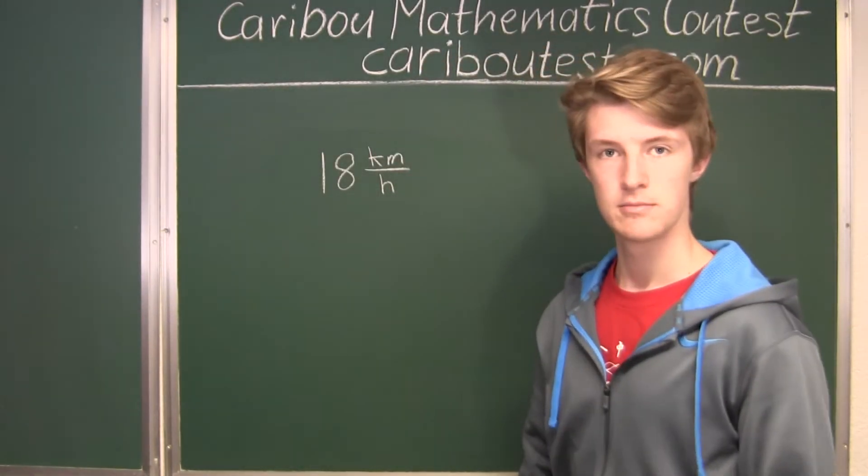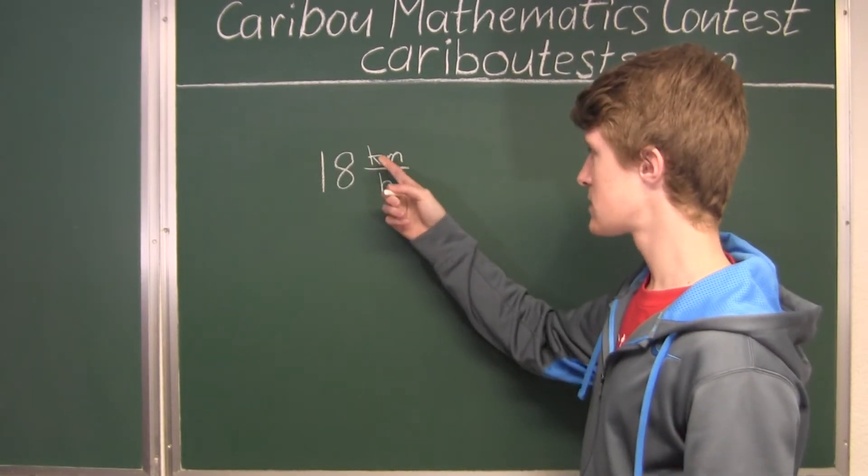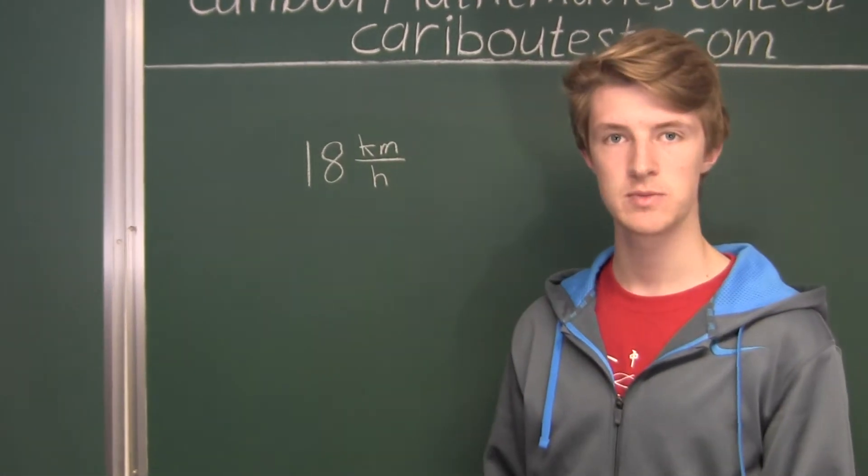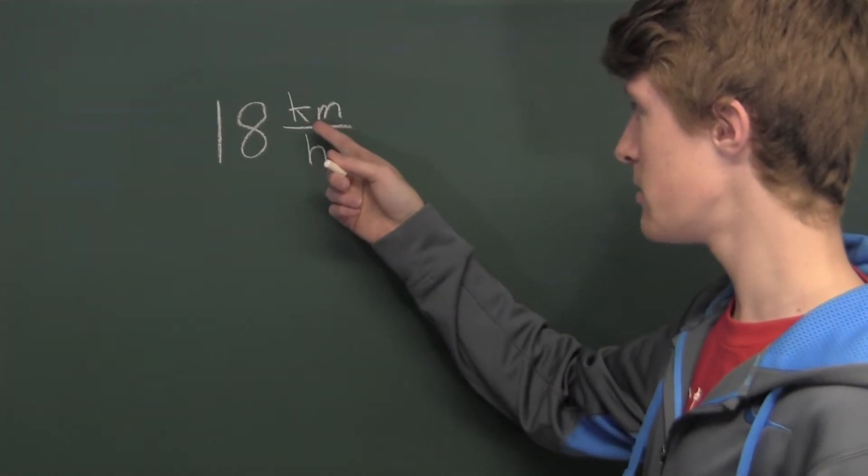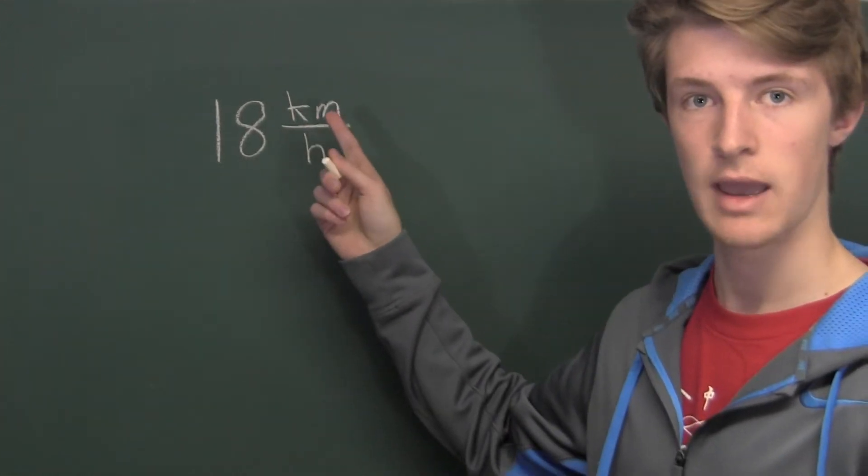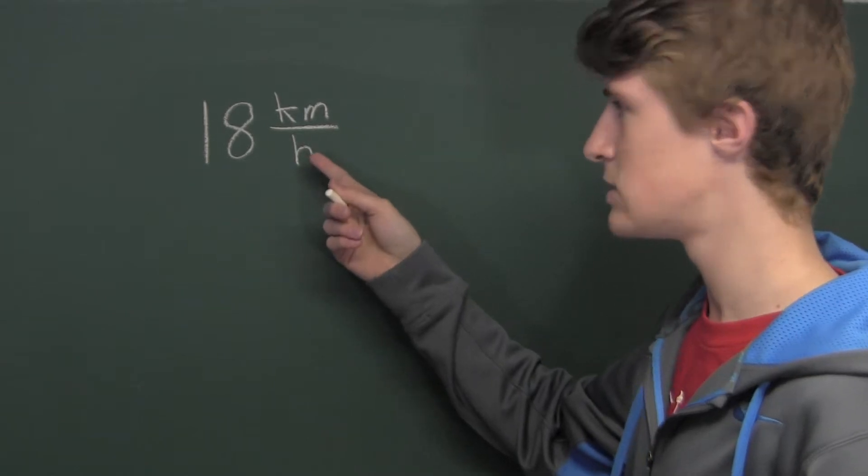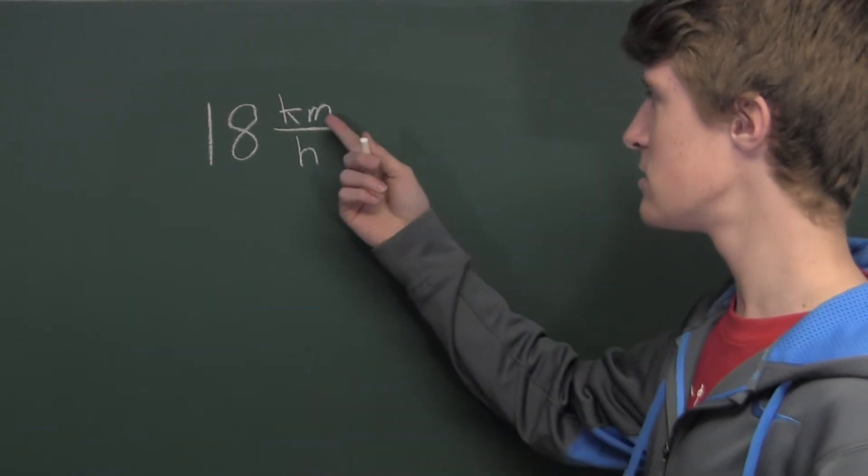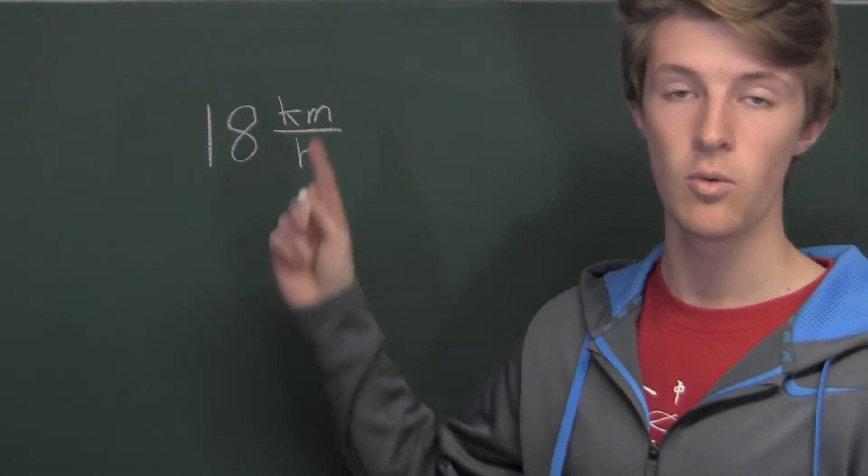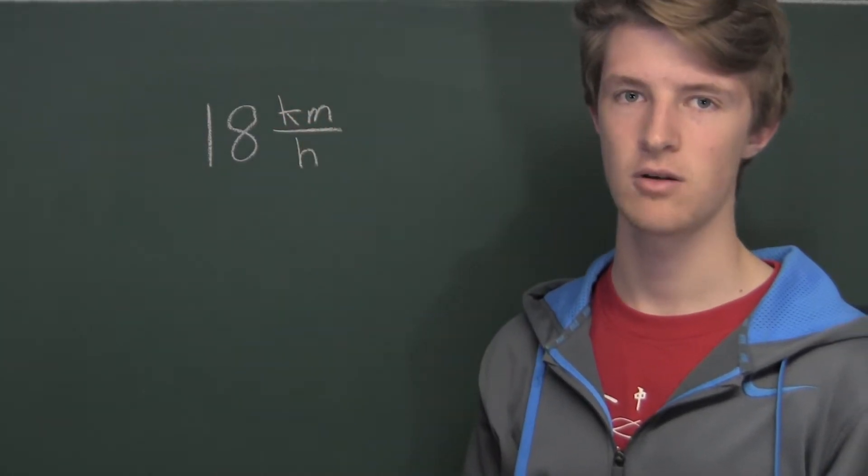Now we want to convert this km per hour into meters per minute. So what we're doing is converting this kilometer into meters and converting the hours into minutes. Now we have to think, how many meters are in a kilometer? Well, 1,000 meters are in a kilometer.